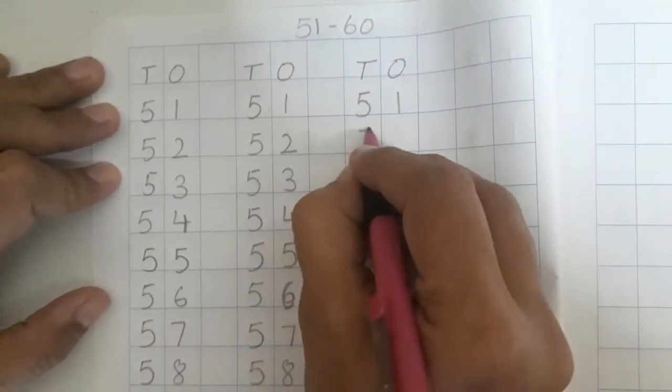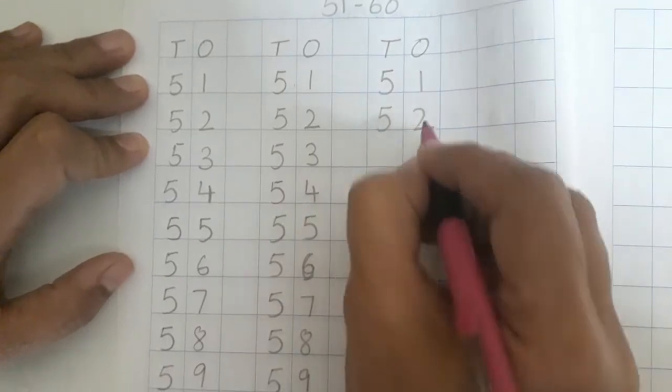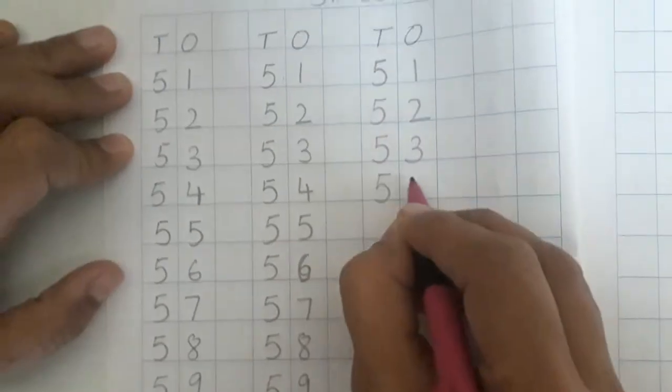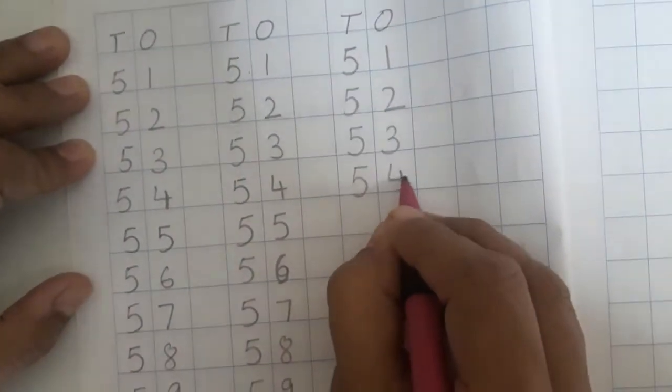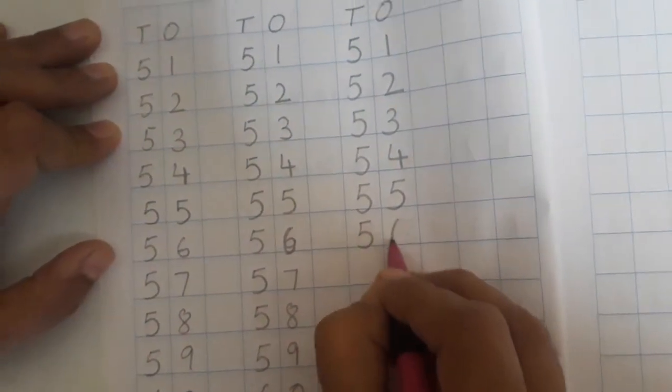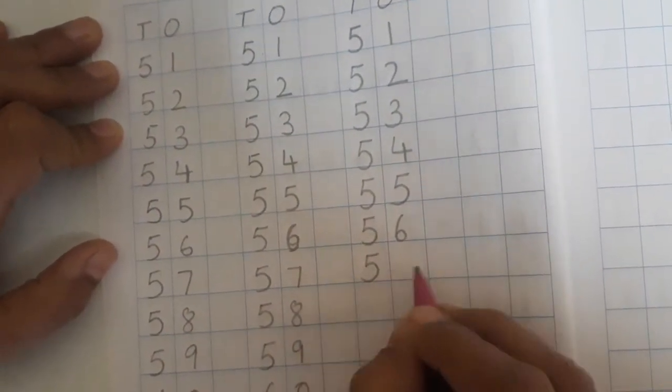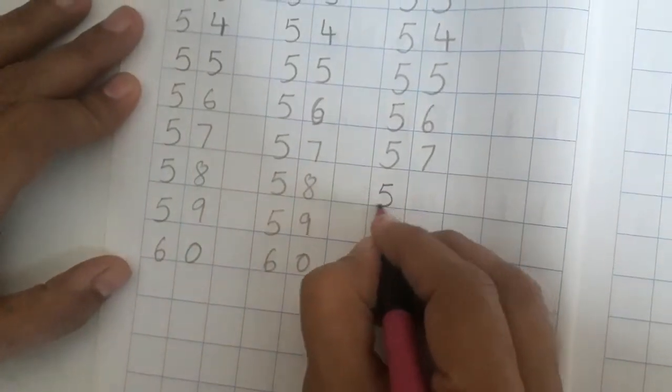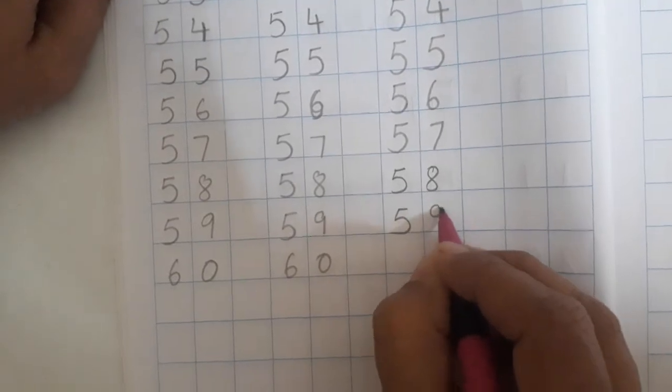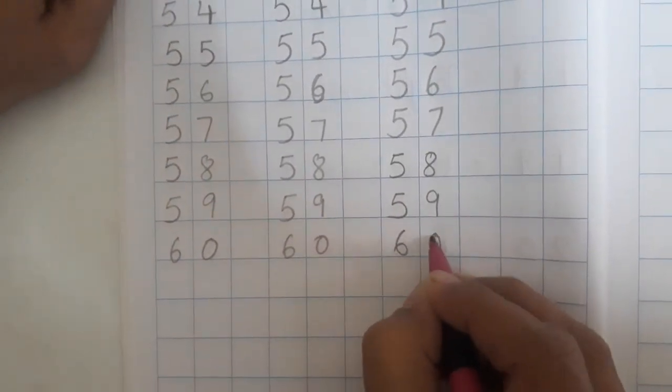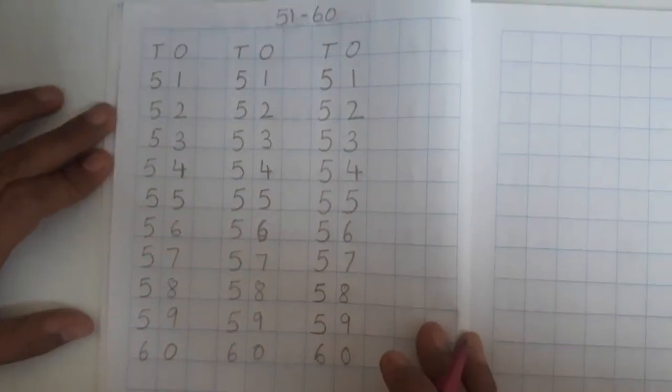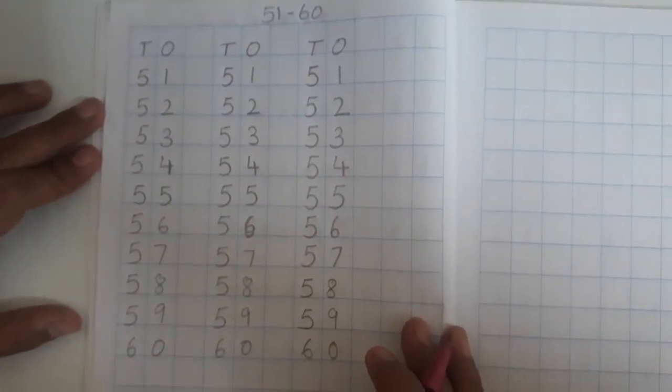So I have written once and twice. I am going to write one more time to show you how to write. So now start. 5, 1, 51. 5, 2, 52. 5, 3, 53. 5, 4, 54. 5, 5, 55. 5, 6, 56. 5, 7, 57. 5, 8, 58. 5, 9, 59. And 6, 0, 60. This way you are going to complete 51 to 60 three times in your notebook.